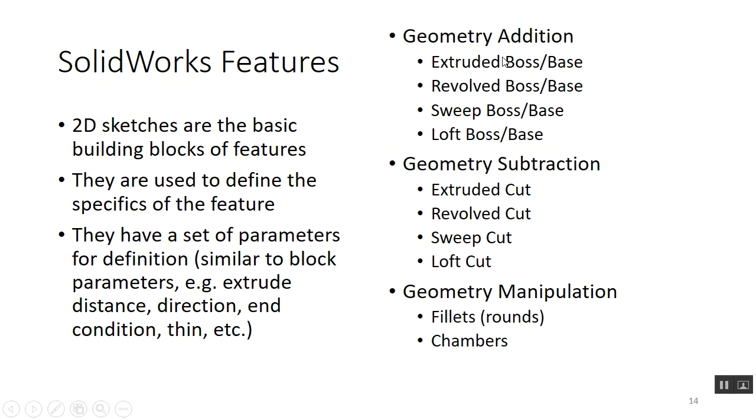What we just did was an extruded boss base — adding geometry — but we can also do a revolve, where you have a centerline and revolve a sketch around it (good for machined parts). A sweep follows a profile along a path. A loft morphs through a series of different profiles — like going from a hexagon to a square to a circle. You can do all these things whether adding or subtracting geometry, and there are also operations like fillets and chamfers.